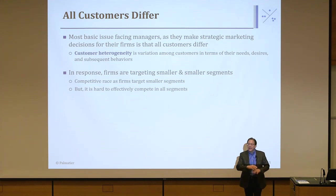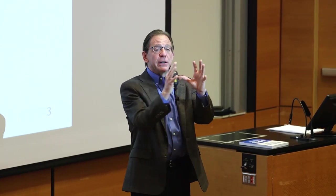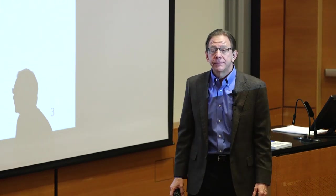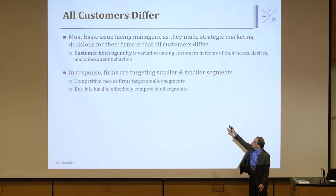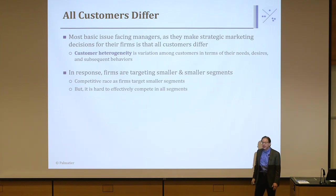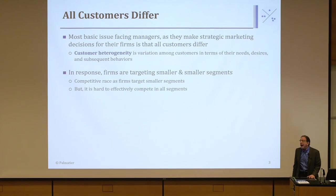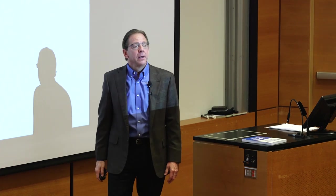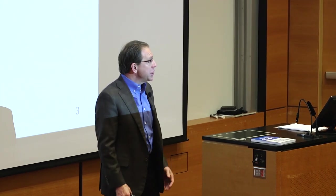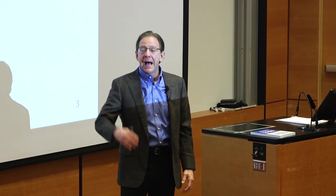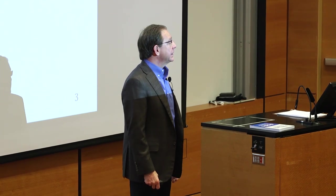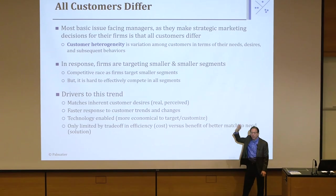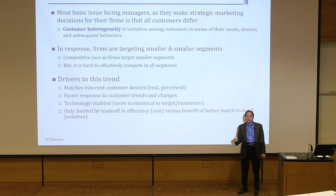So how are firms dealing with this? They take the overall market and segment it into smaller and smaller groups, then design a product that meets that exact customer's needs. What we're seeing happen is firms targeting smaller and smaller groups — there's a competitive race on why and how they're focusing on these smaller segments, because a firm finds it very hard to compete in all segments equally. You can't be the high-end supplier and the low-end supplier, the high-performance and the simple product.